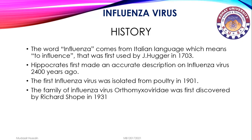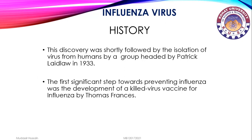This discovery was shortly followed by the isolation of the virus from humans by a group headed by Patrick Ladler in 1933. The first significant step towards preventing influenza was the development of a killed virus vaccine for influenza by Thomas Francis.